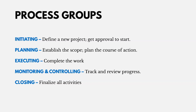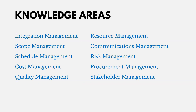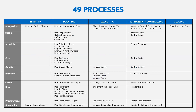The 49 processes are each categorized into one of these process groups and one of the knowledge areas, which represent different areas of project management. In this video, we'll walk through the 49 processes by knowledge area. There's a high-level overview showing where all 49 processes sit, with process groups across the top and knowledge areas on the left. The process reference at projectprep.org provides this along with all the definitions.